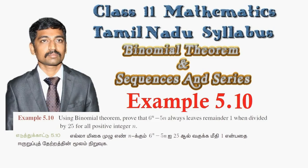Hi students, this is Alex here. Example 5.10: using the Binomial Theorem, prove that 6 power n minus 5n always leaves remainder 1 when divided by 25, for all positive integers n.